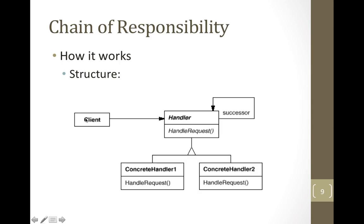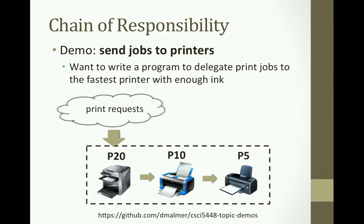I mentioned that the successor is actually optional. Sometimes this chain successor is handled recursively, but sometimes it's useful to actually know the order. So the successor instance or reference isn't always necessary — sometimes you'll know the chain before you send the request. To illustrate Chain of Responsibility, I made a little demo written in Python. It's up on GitHub if you want to take a look.